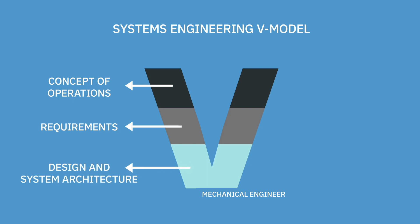Next is design. You want to put your idea on paper — make drawings, make sketches. This is called design and system architecture, just like an architect draws blueprints. Next is your time to create. Create your project from your design. Get all the pieces that you need — the physical hardware, the physical things that you can touch. Make your drawing come alive.